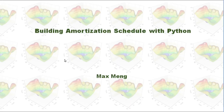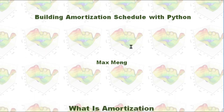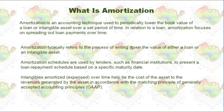This time, I'm going to talk about how to build an amortization schedule with Python. So what is amortization? Amortization typically refers to the process of writing down the value of either a loan or an intangible asset.